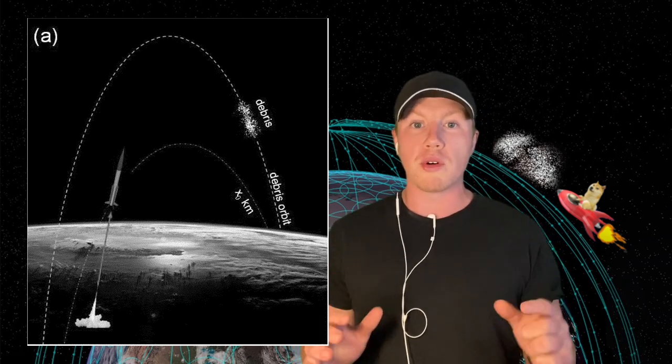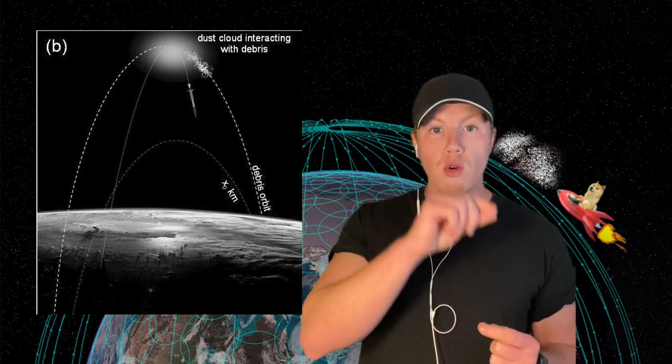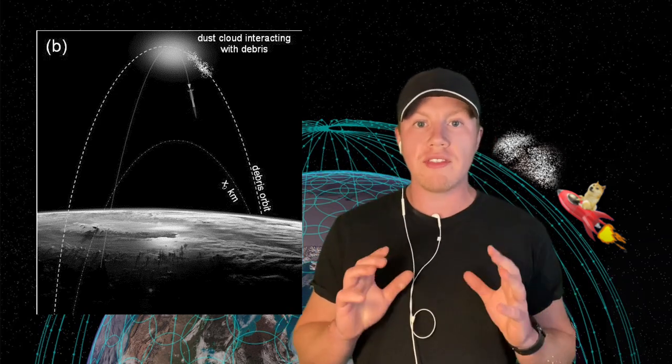And they would launch it in the opposite direction of the debris cloud. So just visually, if the debris cloud was going this direction, they would launch the rocket and then have an orbital cloud to intersect with this debris. I know that's not the best visual, but it's just going in the opposite direction of the orbiting debris. So the rocket goes up, it releases the cloud of tungsten powder, it creates a cloud that orbits in the opposite direction of the debris.